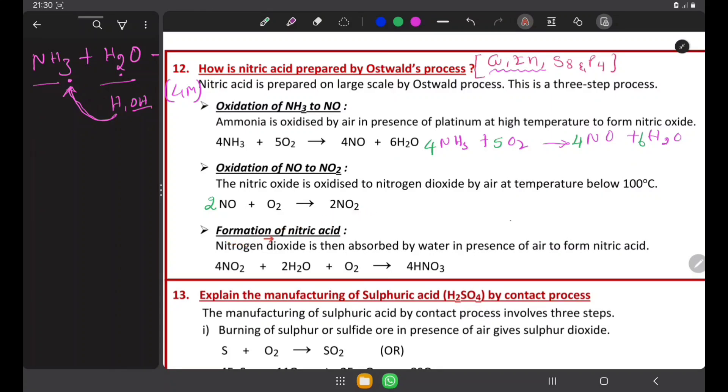And in the last step, formation of nitric acid. Do not be confused. NO is called nitric oxide and HNO3 is called nitric acid. This is an acid. This is oxide, nitric oxide NO.